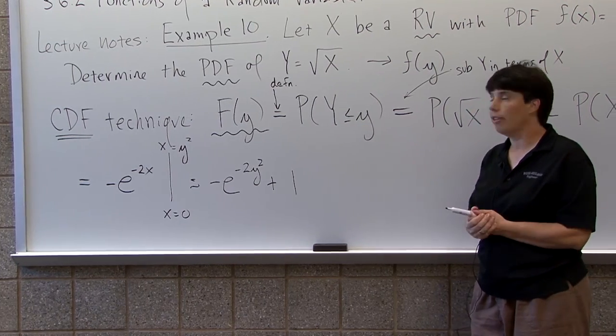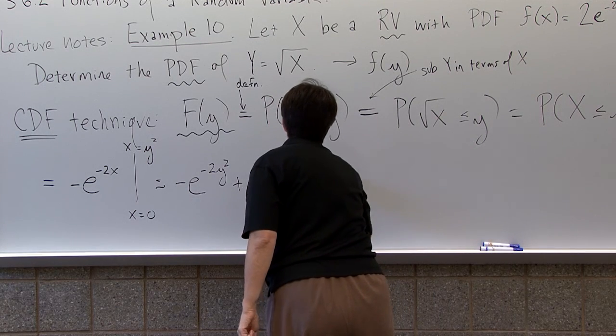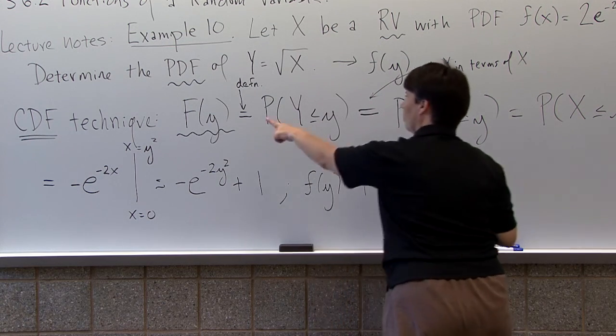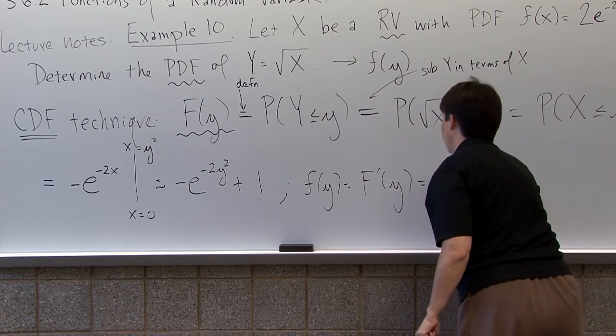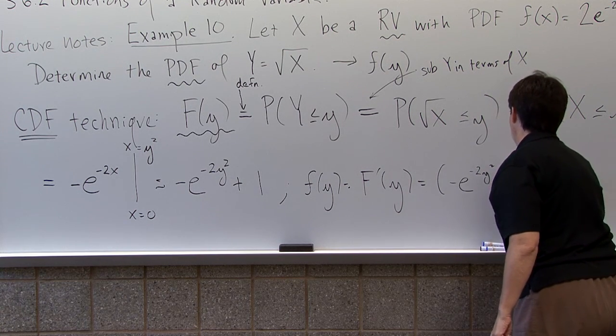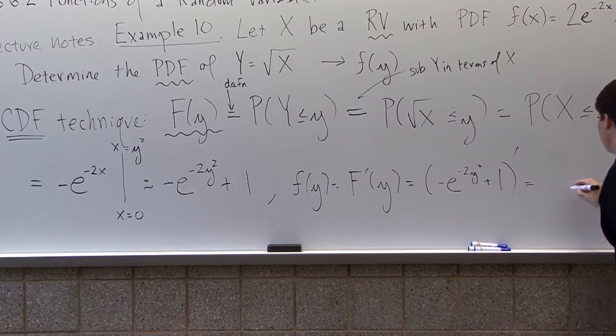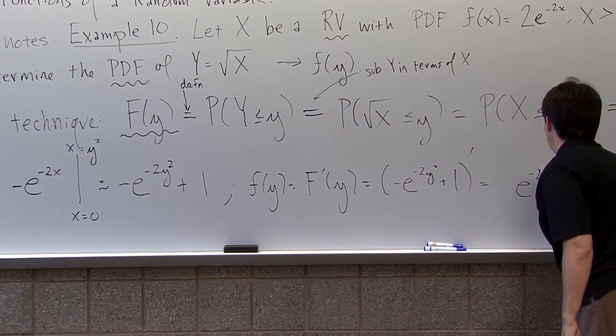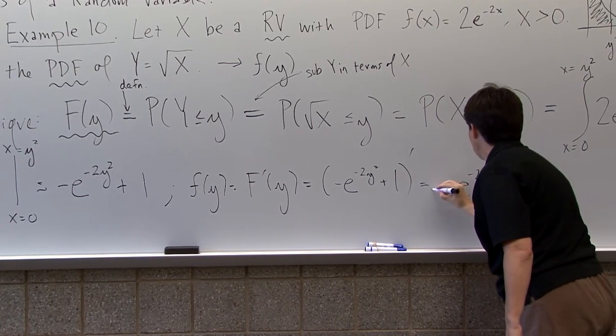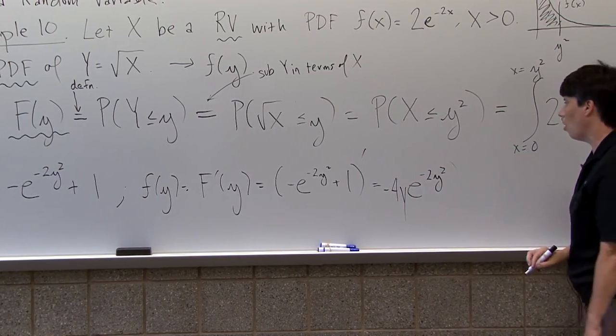Okay. And now to find little f, all you have to do is take a derivative. So little f is capital F derivative. So here we have negative e to the negative 2y squared plus 1. Take that guy's derivative. And so this is going to be e to the negative 2y squared. Derivative of the inside then is negative 4y. And derivative of 1 is 0.